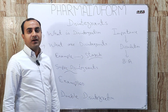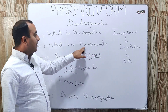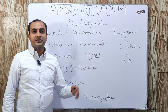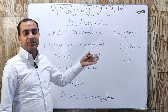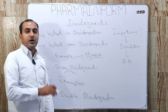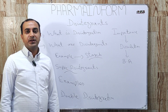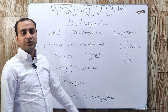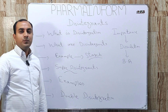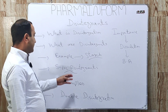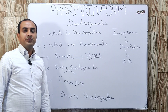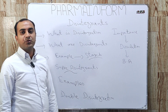Now, what are super disintegrants? As the name indicates, super disintegrants are superior to conventional disintegrants. They make the disintegration process faster at a smaller concentration. Super disintegrants are usually used at a concentration of 4 to 8%.